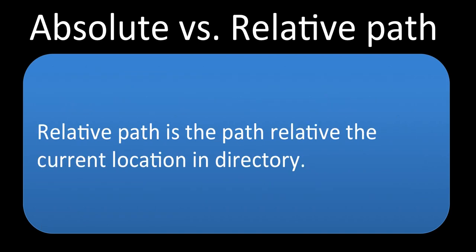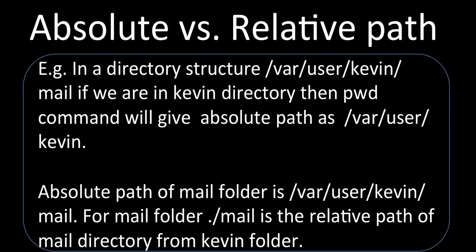The relative path is the path relative to the current location in a directory. It describes how the file is located relative to the current position — whether it is a parent, a child, or further down in the hierarchy.